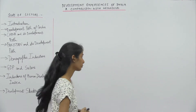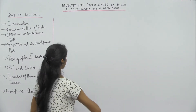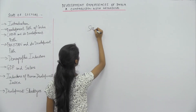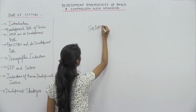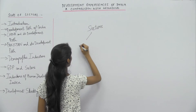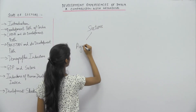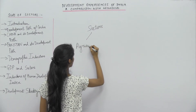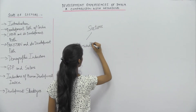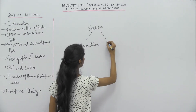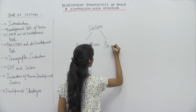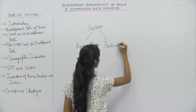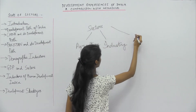There are three sectors of the economy: agriculture, industrial, and service sector.